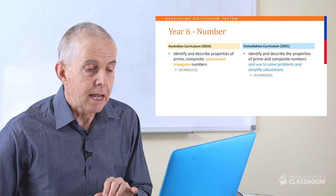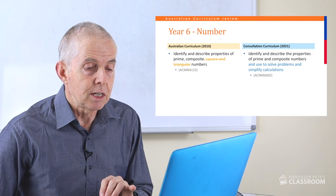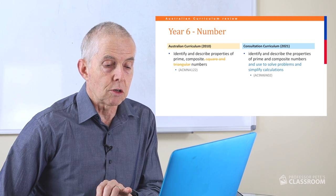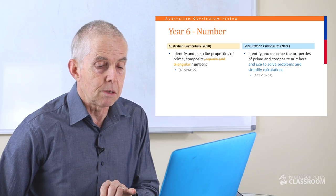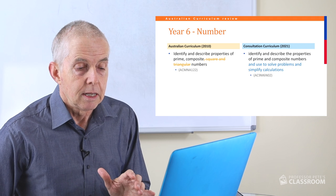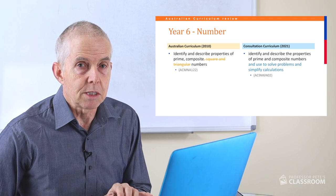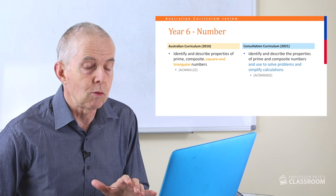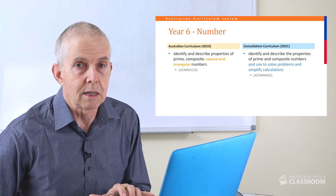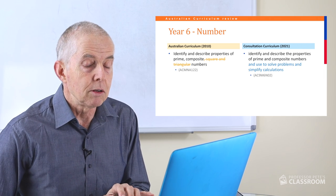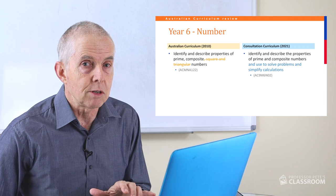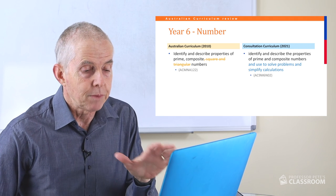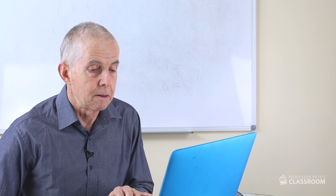The second content descriptor has identified and described the properties of prime and composite numbers and used them to solve problems and simplify calculations. Square and triangular numbers have disappeared — I think that's a shame. Knowing what the square numbers are is important, and triangular numbers is an interesting topic that leads into algebra. However, it's no longer there.